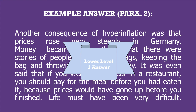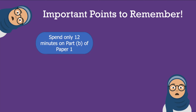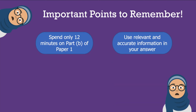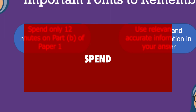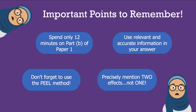Here are some key points to remember: spend only 12 minutes on Part B; use relevant and accurate information; remember SPEND - Statistics, Places, Events, Names, and Dates; don't forget the PEL method described throughout this video; and precisely mention two effects in your answer, not one. One effect per paragraph - the other effect in the other paragraph. That's all. I hope you understood how to answer Part B. I'm going to make another video on Part C soon, so stay tuned and don't forget to subscribe if you're new. Thanks for watching.